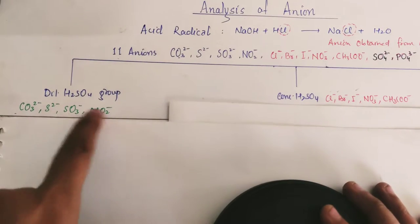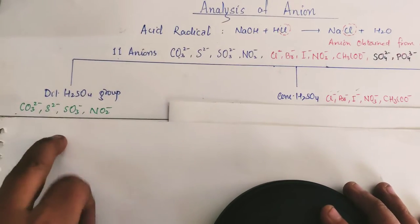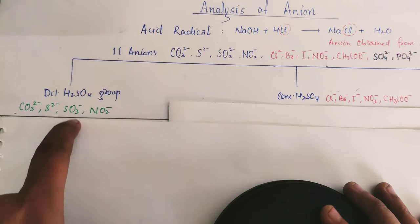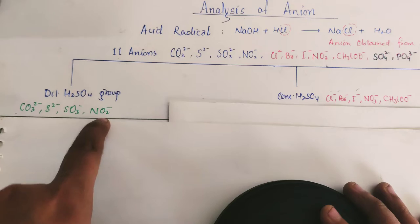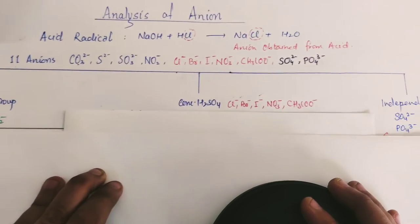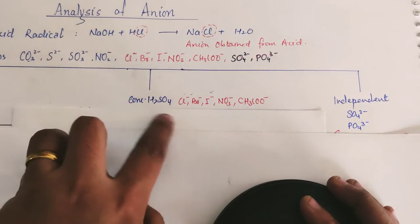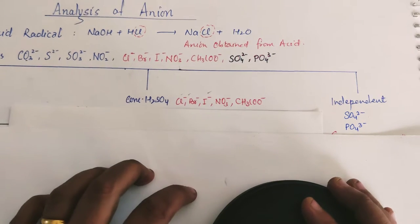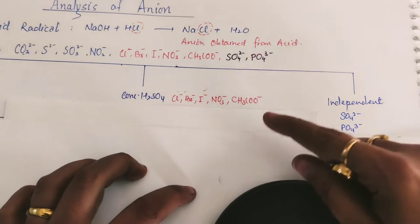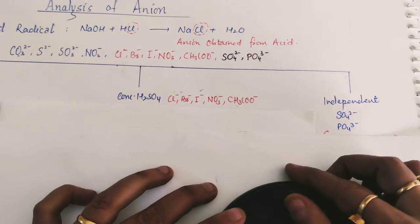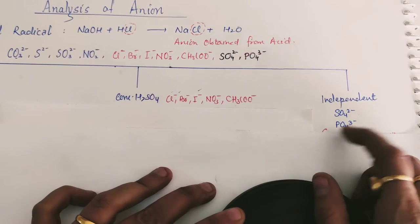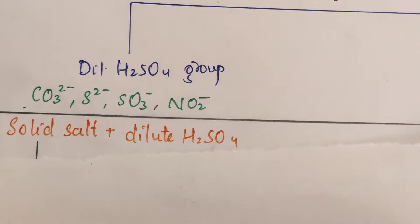The first category contains anions that react with dilute H₂SO₄: carbonate, sulfide, and nitrite. The second category contains anions that react with concentrated H₂SO₄: chloride, bromide, iodide, nitrate, and acetate. The third category — the independent group — contains anions that do not react with either dilute or concentrated H₂SO₄: sulfate and phosphate.